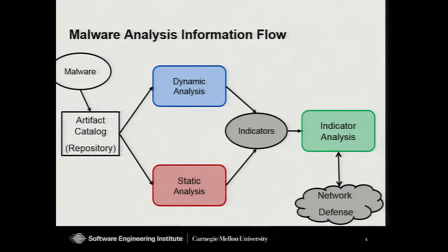Here is the very broad scale overview of the process. We collect malware somehow — that's a little bit of a black box, and Joseph will talk a little bit more about how we do that. That goes into our artifact catalog; we have this at CERT, it's just a collection of all of the things that we have found. We do two things to that: static analysis, which means we don't run the software and look at what we can from the executable file, and dynamic analysis, where you run it and see what it tells you about itself. From both of these kinds of analyses, we get indicators of compromise — some sort of hash of the file, some particular function, some particular IP address or domain name or something else that it calls out to that is somehow able to identify that there's a problem going on.